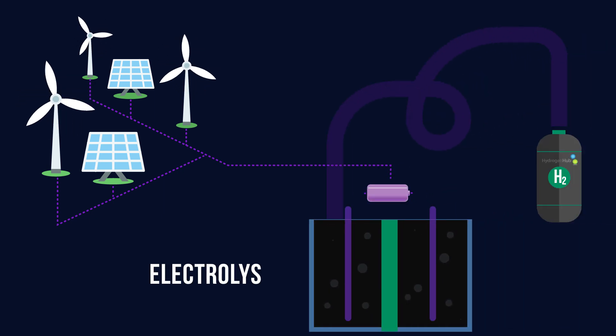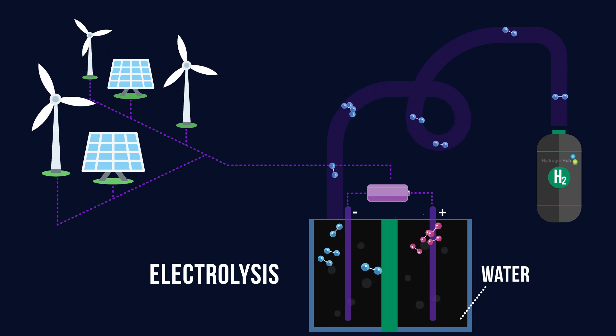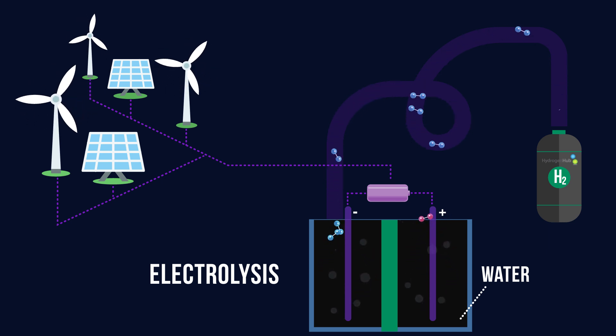Electrolysis uses this clean source of energy to split water into hydrogen and oxygen. The hydrogen is then captured without any harmful emissions. So let's take a look at fuel cells and how they use this hydrogen.